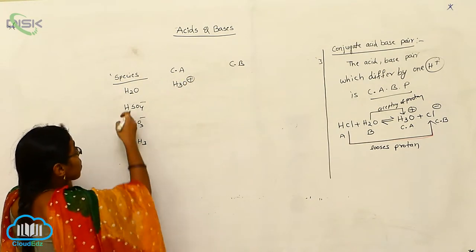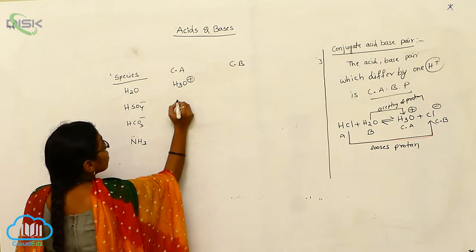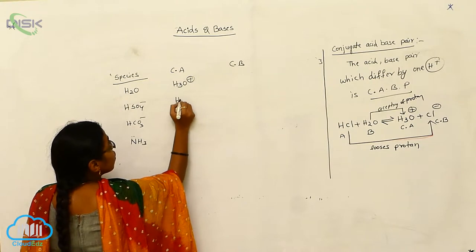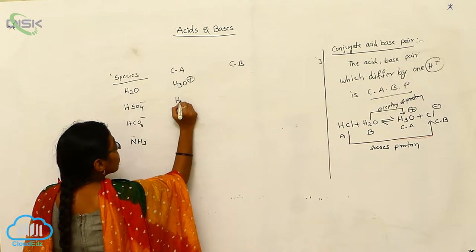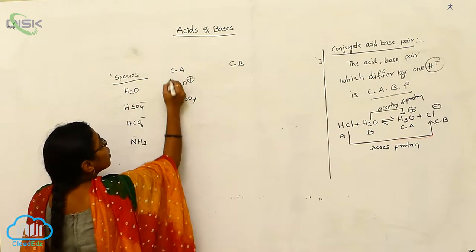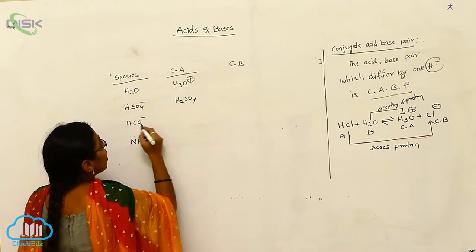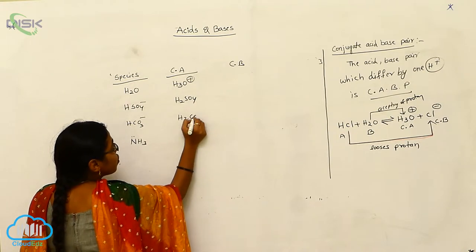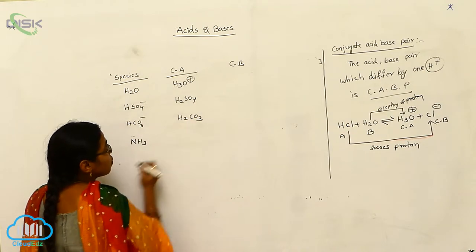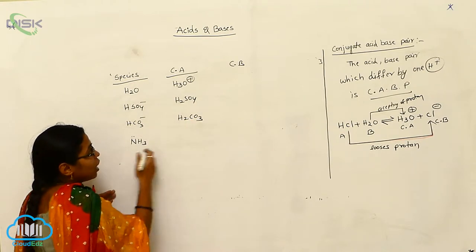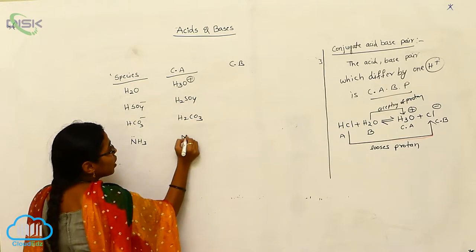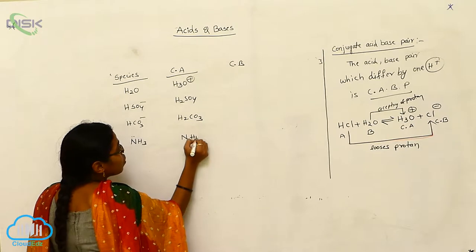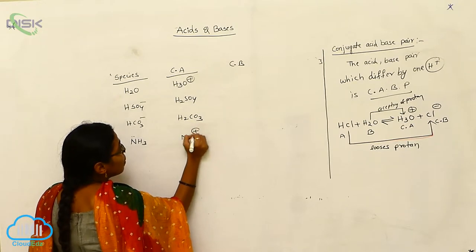For HSO₄⁻, accepting an H⁺ ion gives H₂SO₄. For HCO₃⁻, you can write H₂CO₃. And for NH₃, you can write NH₄⁺.